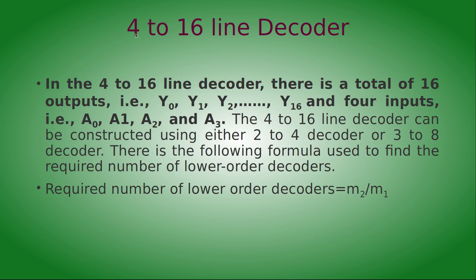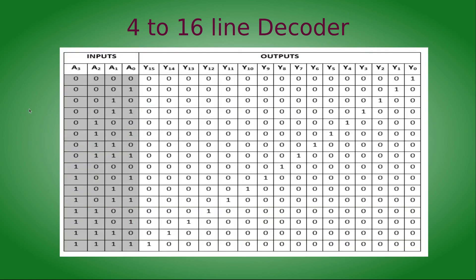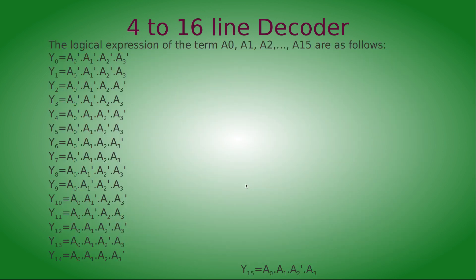Next is the four-to-sixteen line decoder, where a four-bit binary number is converted into a hexadecimal number. This circuit is formed by combining two three-to-eight line decoders. For example, input 0000 activates Y0; input 0111 activates Y7; and input 1010 activates Y10. The formula follows the same structure as the three-to-eight decoder, but there is no enable input here.